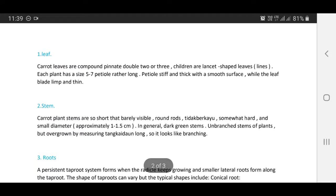Now we discuss the leaf of carrots. Carrot leaves are compound pinnate with linear-shaped leaflets. Each plant has 5-7 petioles, rather long. Petiole is stiff and thick with smooth surface, while the leaf plate is limp and thin.